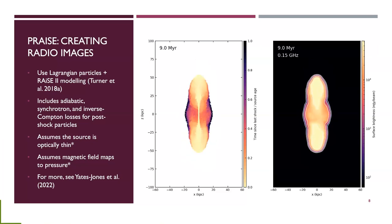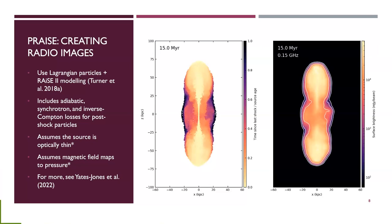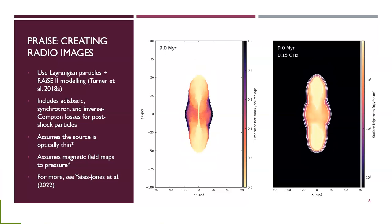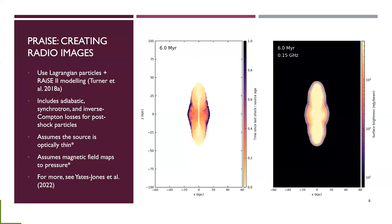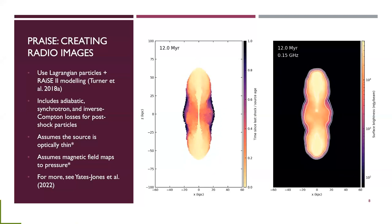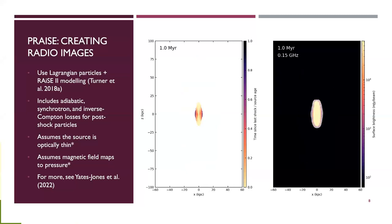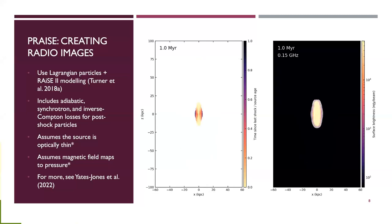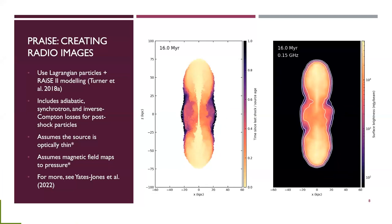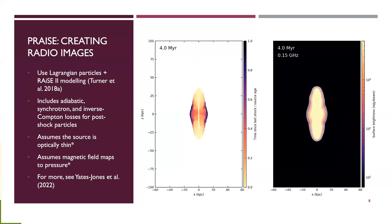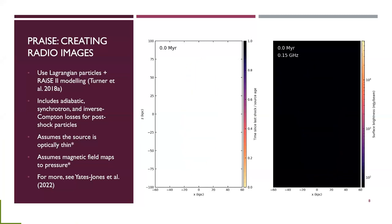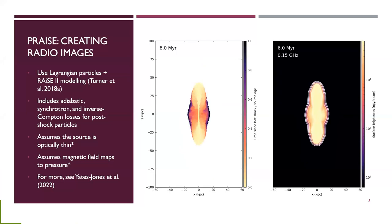Our code includes different loss processes: adiabatic, synchrotron, and inverse Compton loss processes. A main assumption I'm working on is this magnetic field mapping to pressure. For the synchrotron radiation calculation — synchrotron radiation involves electrons spiralling around magnetic field lines — it depends on the magnetic field. Previously, we didn't have magnetic fields in our setup, so we had to assume the magnetic field is something like pressure. I'm working on removing that assumption as the next step in my PhD.